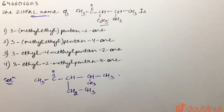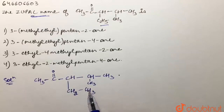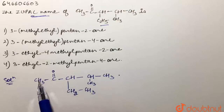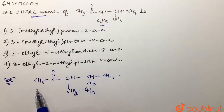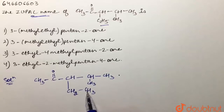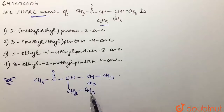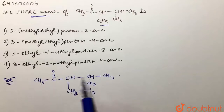First of all, we're going to look for the longest carbon parent chain that is possible. We can have one, two, three, four, five carbon atoms in a parent chain — or we can count one, two, three, four, five from another direction. So we are getting five from every direction.